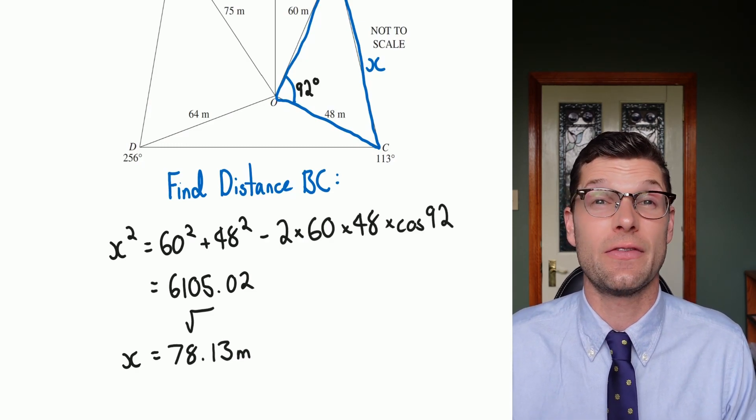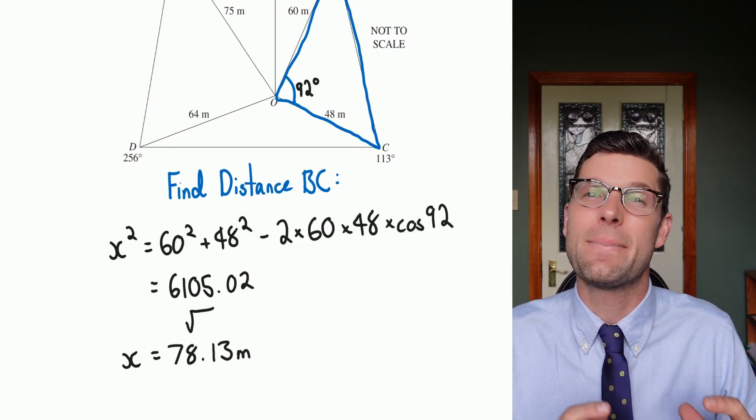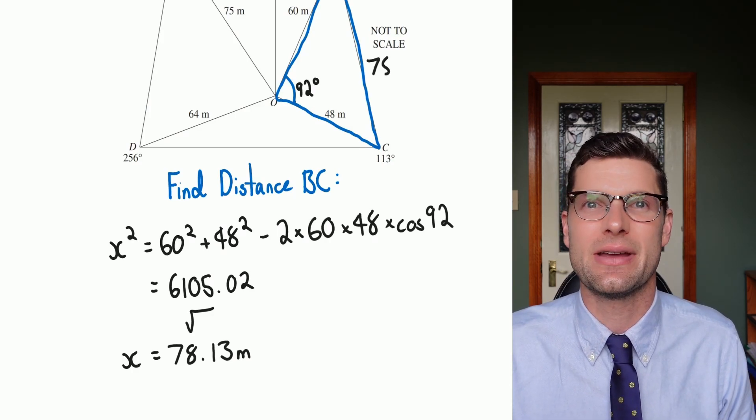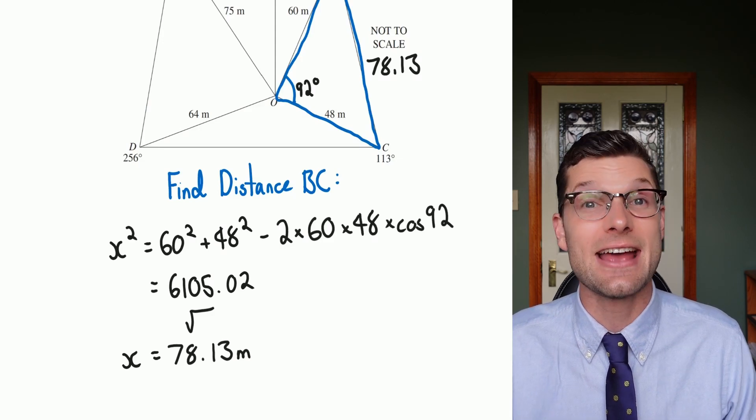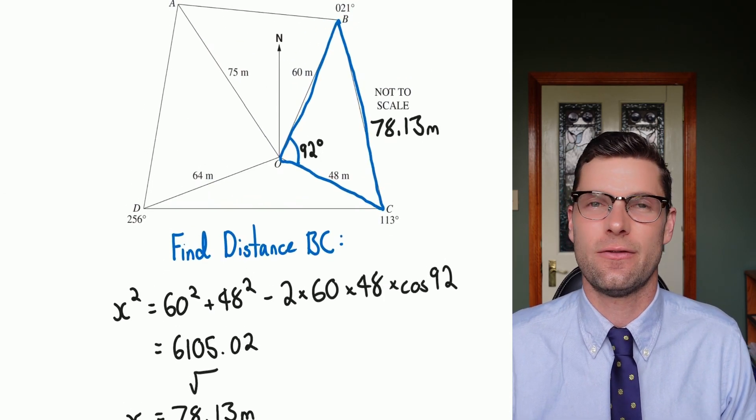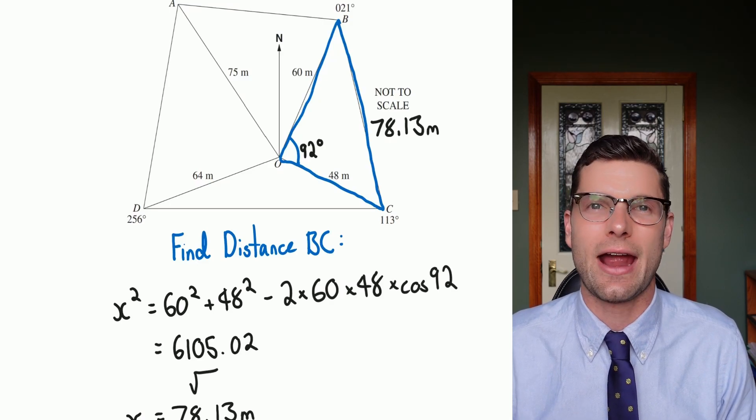We actually know that this is definitely going to be correct because 92 has to be the biggest angle in this triangle, we know that that side length BC has to be the longest length. 78 is bigger than the 60 and 48, so we know we're on the right track.